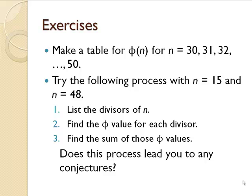Here are some exercises where I'd like for you to make a table of phi of n for n going from 30 all the way up to 50. Also, try this process for a couple of numbers — 15 and then 48 — where you list all of the divisors of that number, find the phi value of each divisor, and then sum the phi values. Once you've done that, see if it leads you to any conjectures.